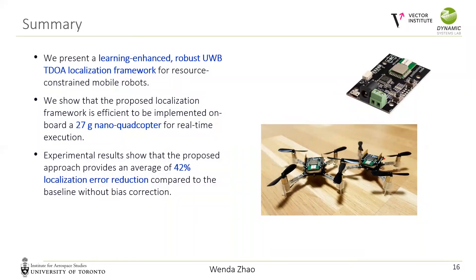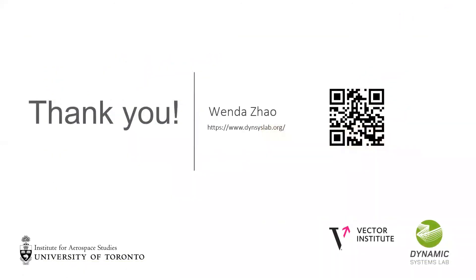In summary, we presented a learning-enhanced robust UWB TDOA-based localization framework for resource-constrained mobile robots. We showed that the proposed method is efficient enough to be implemented onboard a nano-quadrotor for real-time execution. We demonstrated the effectiveness and generalizability of our approach through real-world flights. Experimental results show that the proposed method provides an average of 42 percent localization error reduction compared to the baseline method without bias correction. Thanks for listening. For more interesting research works and quadrotor projects, please visit our lab website.